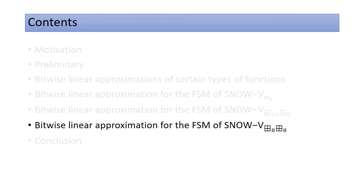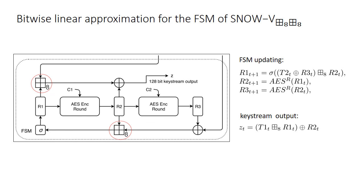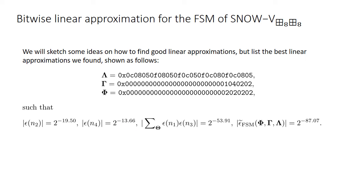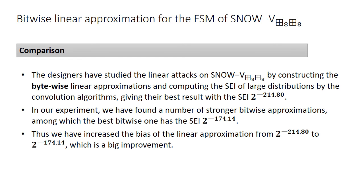Finally, we give a brief study on another variant of SNOWV whose bitwise linear approximation has been studied in the design document. In this variant, both 32-bit adders are replaced by 8-bit adders. We sketch some ideas on how to find good bitwise linear approximations and list the best results we found. Compared with the results based on bitwise linear approximations in the design document, we increase the bias of the linear approximation significantly.